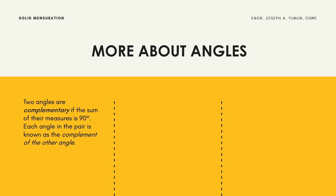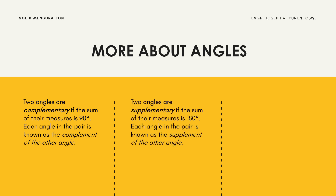Two angles are complementary if the sum of their measures is 90 degrees, and each angle in the pair is known as the complement of the other. Similarly, two angles are supplementary if the sum of their measures is 180 degrees, and each angle is known as the supplement of the other.